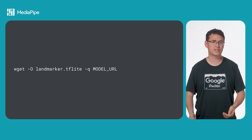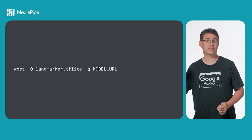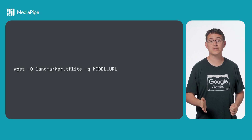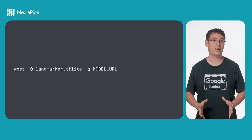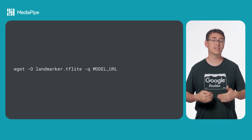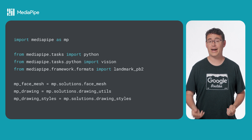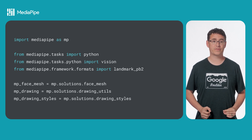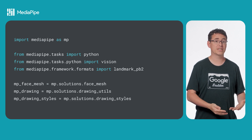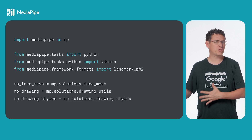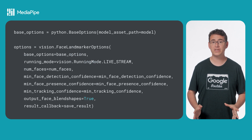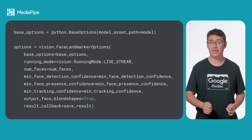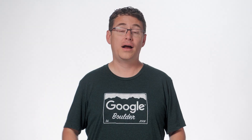There are a variety of ways you can get the model, including using the wget command from the terminal that you can see on screen to get a stock model that has already been tested. Since I'm not using a custom model for this example, I'll use this exact command to retrieve an existing tested model and place it in the same directory as my Python script. Getting into the actual Python program, you have a few necessary imports for using MediaPipe tasks, plus I've created a few objects for drawing the face.